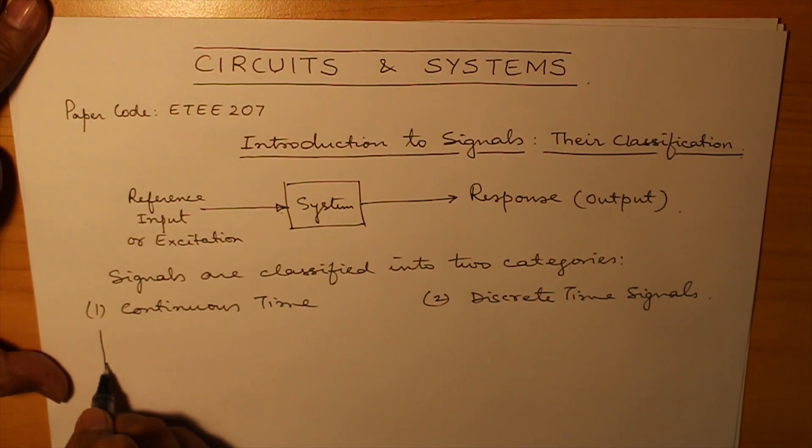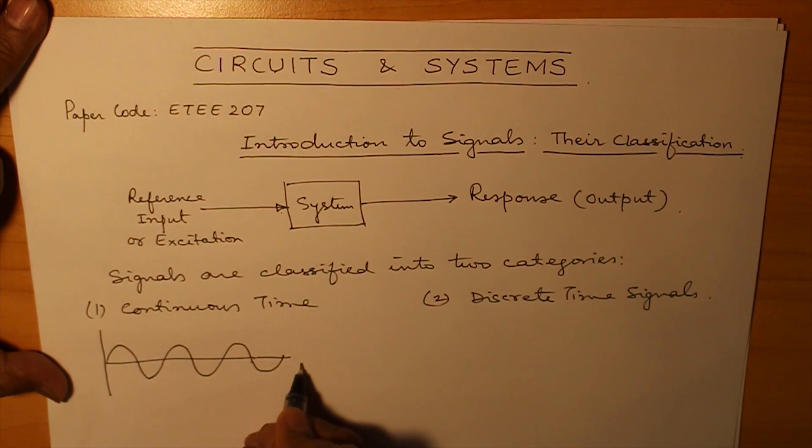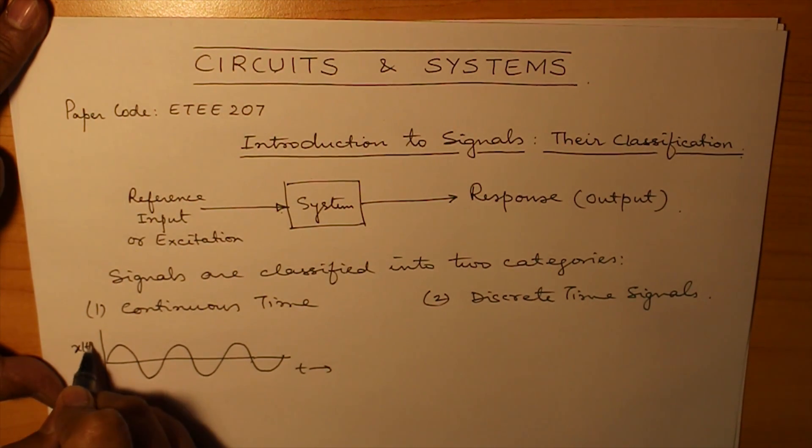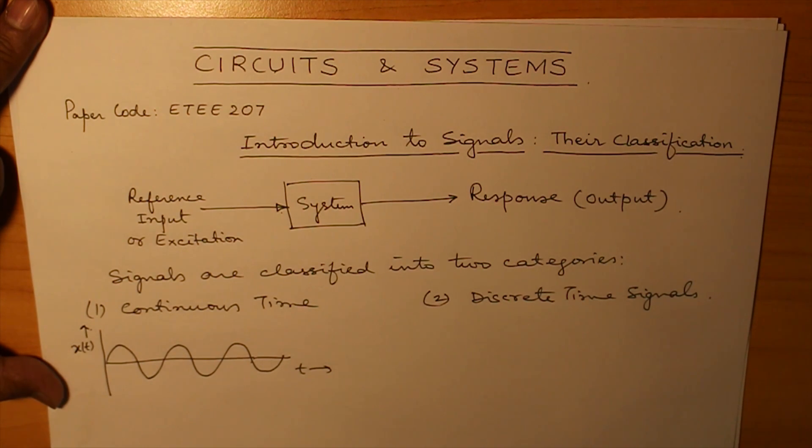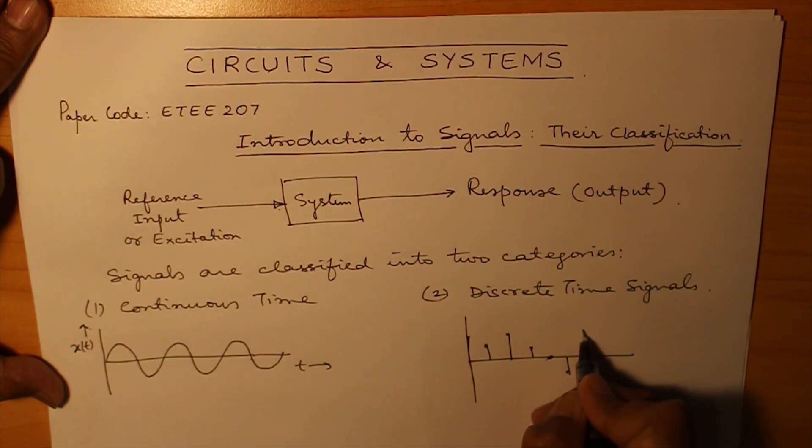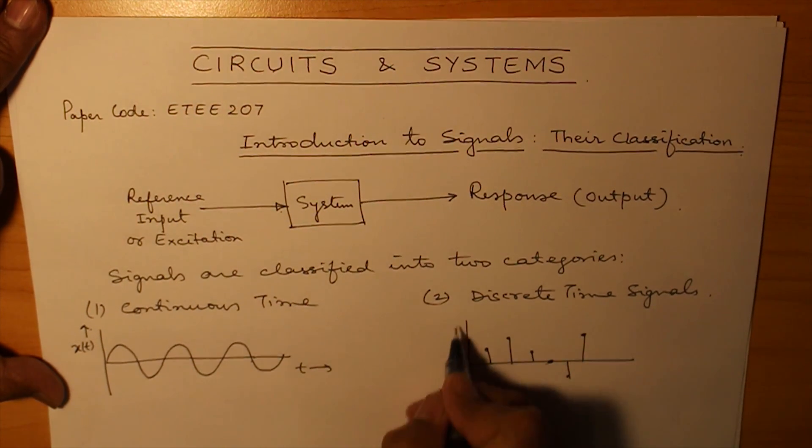Continuous time signals are those which can be plotted with respect to time. And discrete time system is something which is existing for a particular instant of time. The value can be anything. This is a discrete time signal.